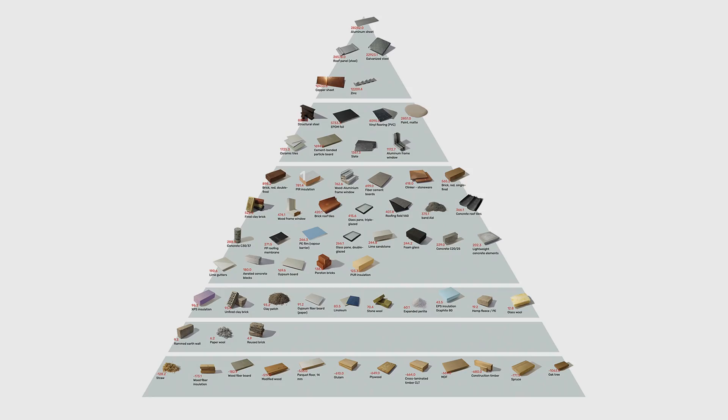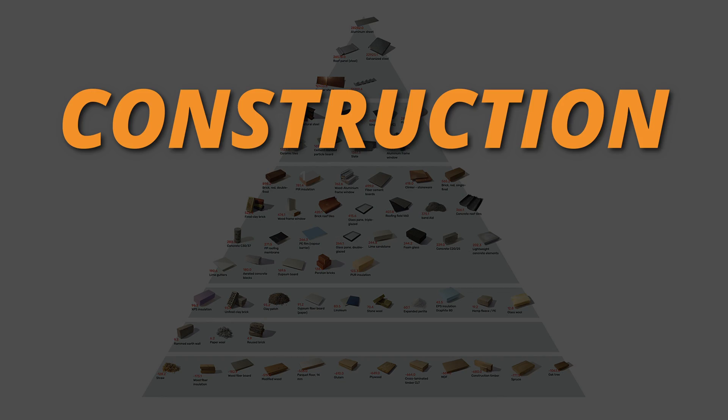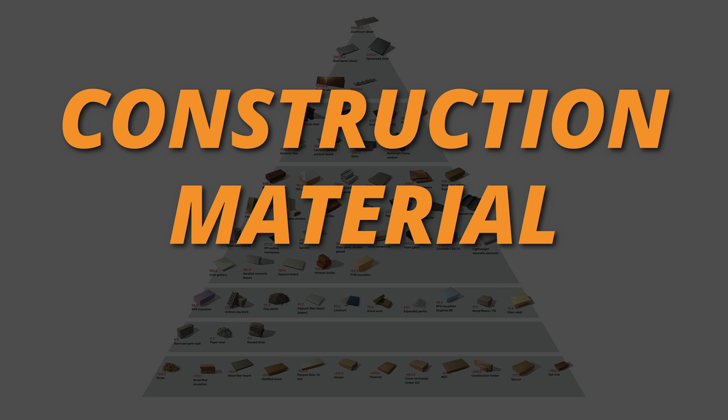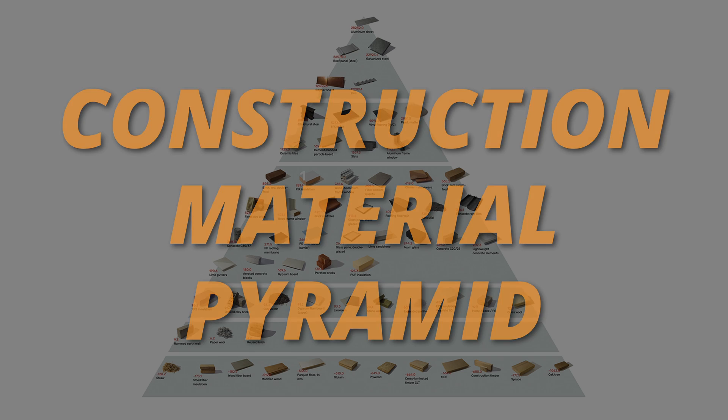Food pyramids have been debated and debunked, but there's no denying that we are what we eat. Can we apply a similar principle to our buildings? Can we rate structures based on the environmental impact of materials used to build them? That's exactly what the Construction Material Pyramid hopes to achieve.